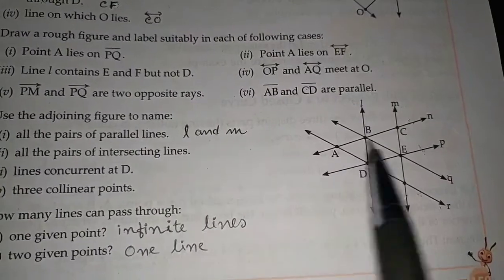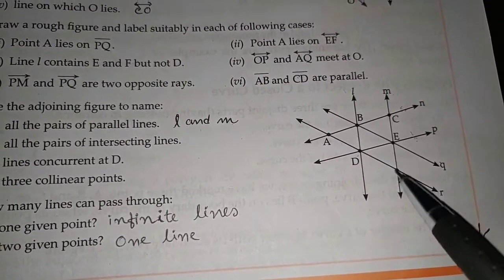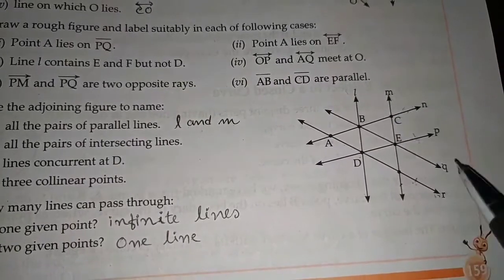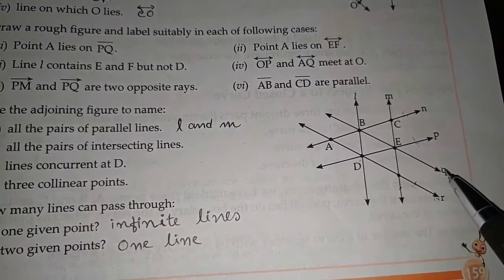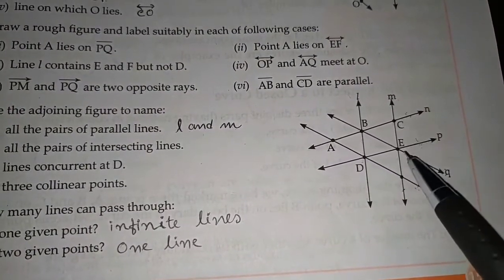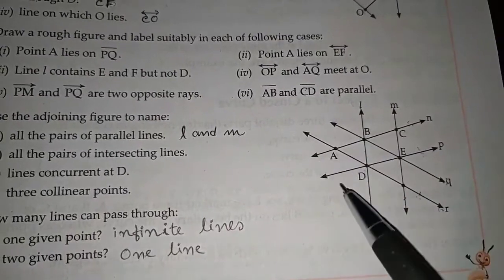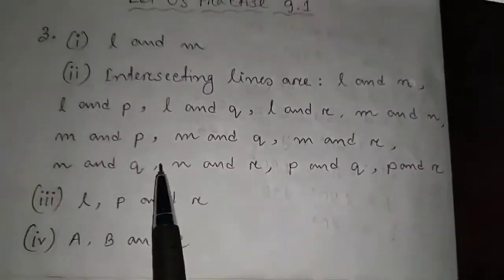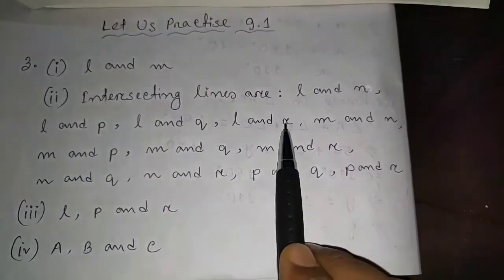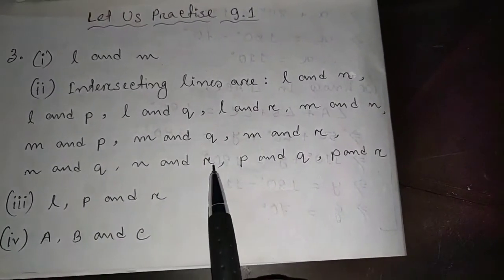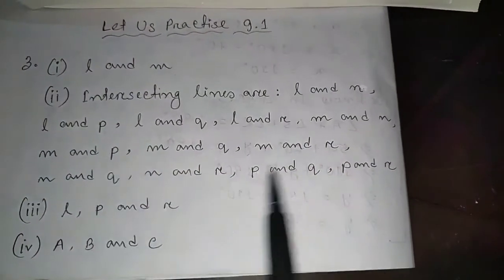Number two: all pairs of intersecting lines. Intersecting lines are those that meet at a point. The pairs are: L and N, L and P, L and Q, L and R, M and N, M and P, M and Q, M and R, N and R, P and Q, and P and R. These are all the intersecting line pairs.